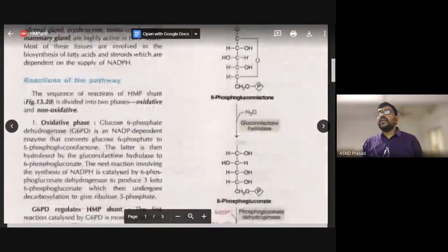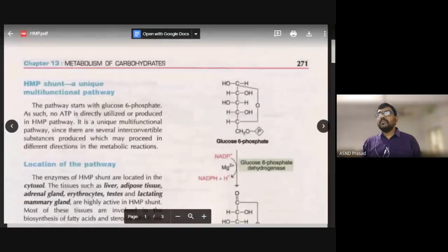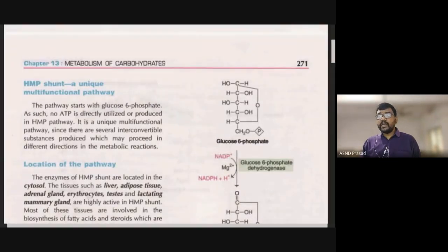Starting with 6 molecules of glucose-6-phosphate entering the pathway, 5 molecules of fructose-6-phosphate are released, along with 6 carbon dioxide molecules. This represents the overall stoichiometry of the HMP pathway when one complete glucose molecule is oxidized.